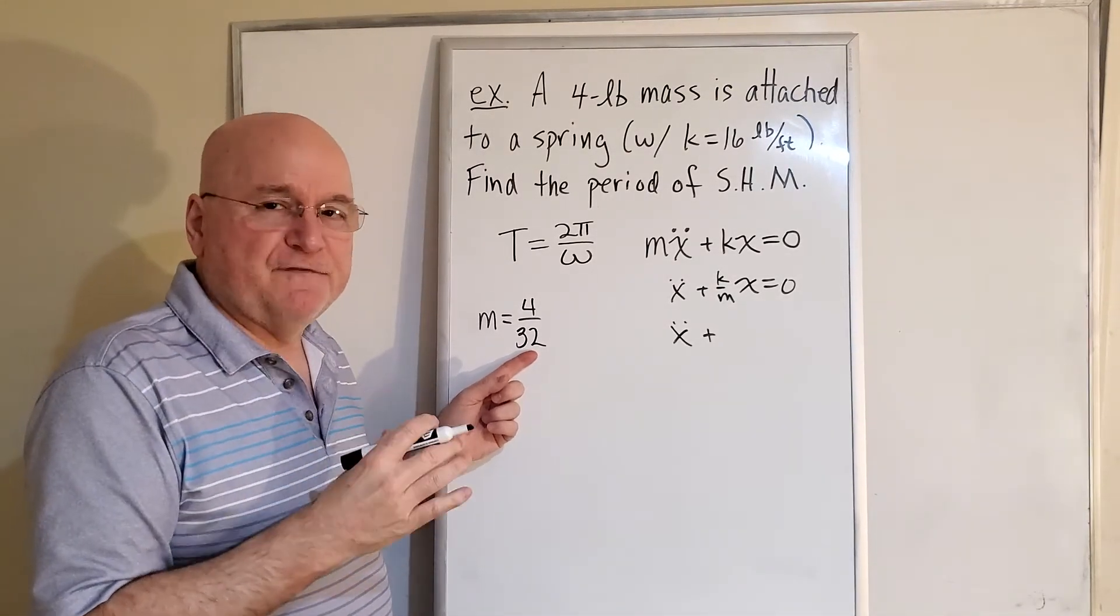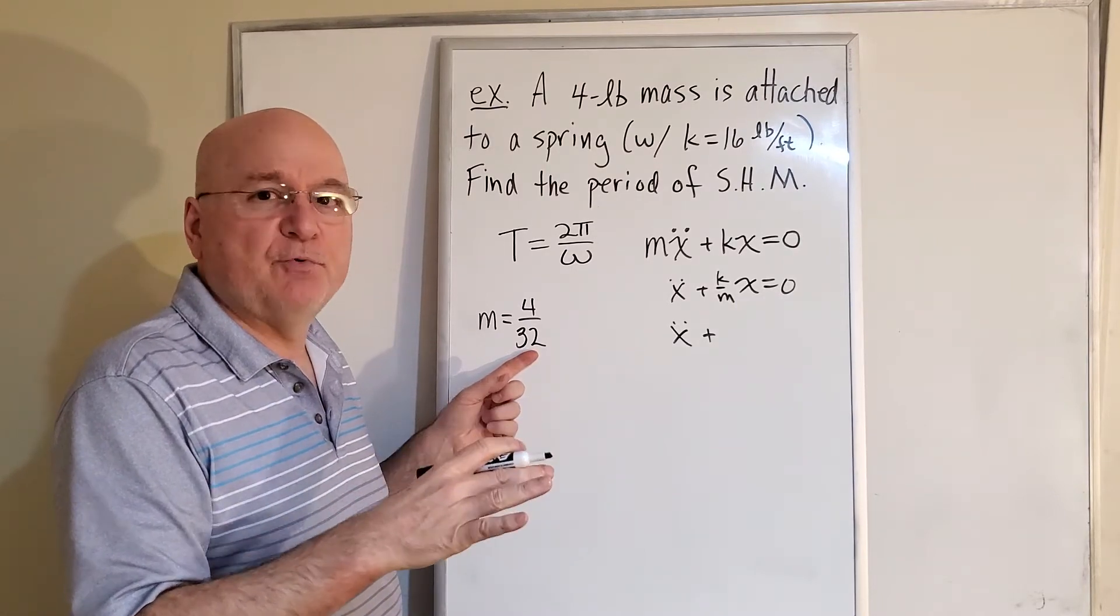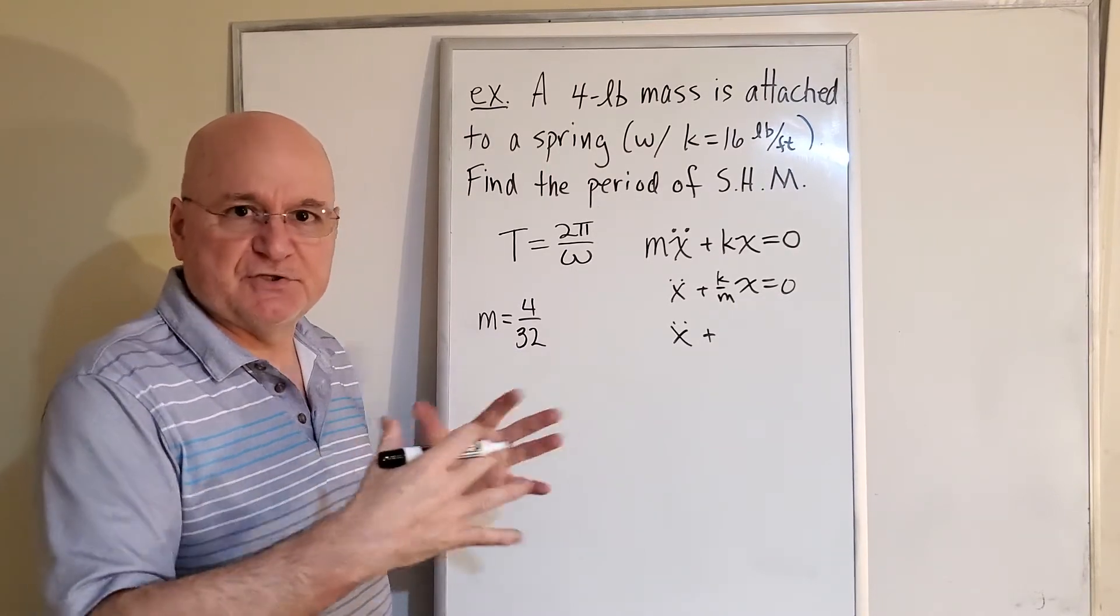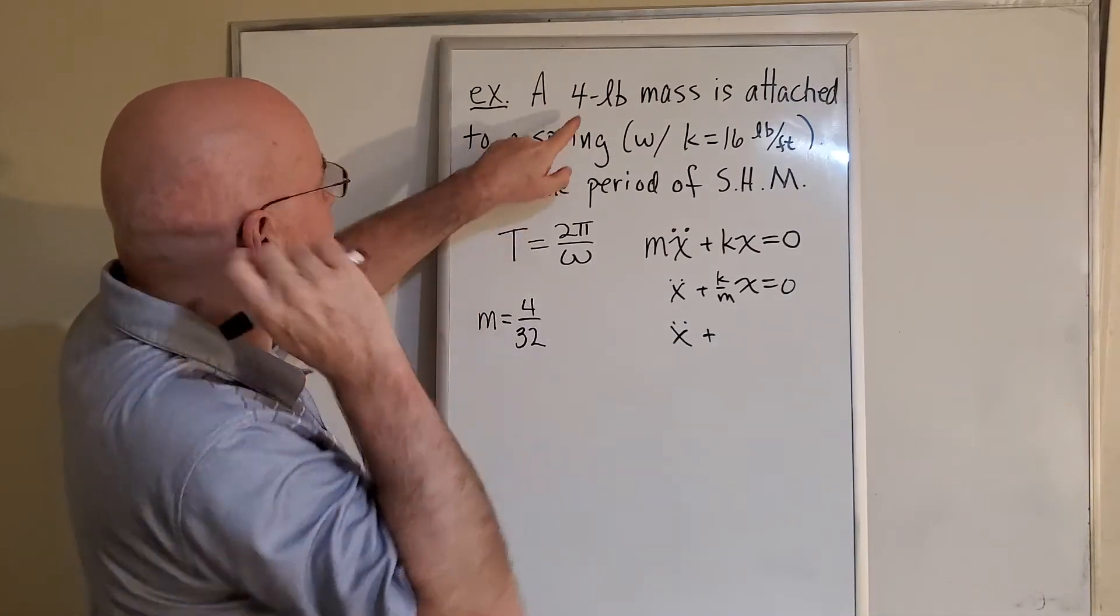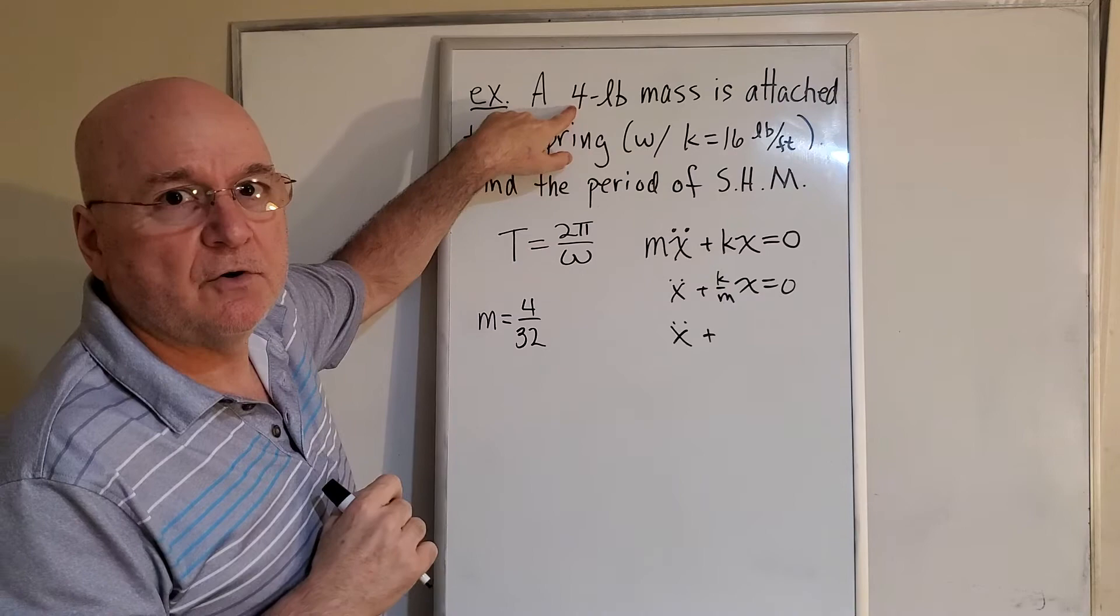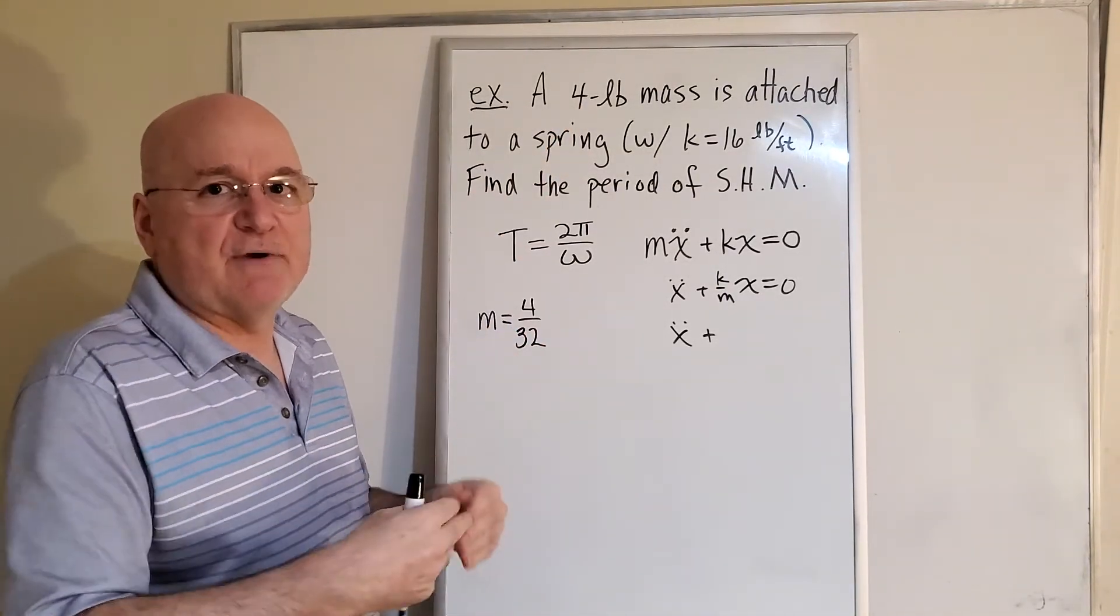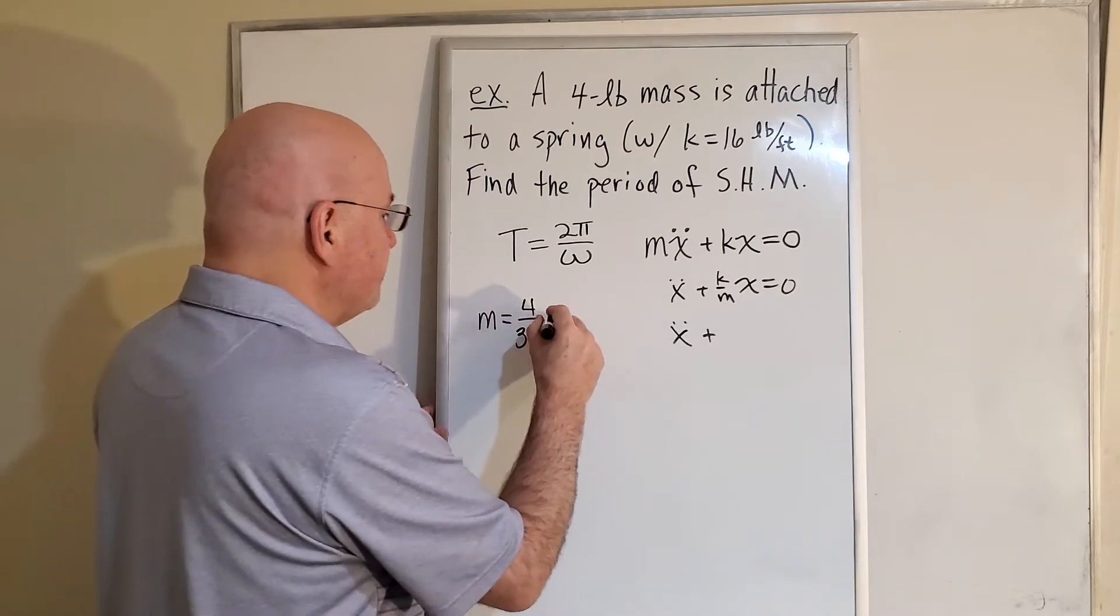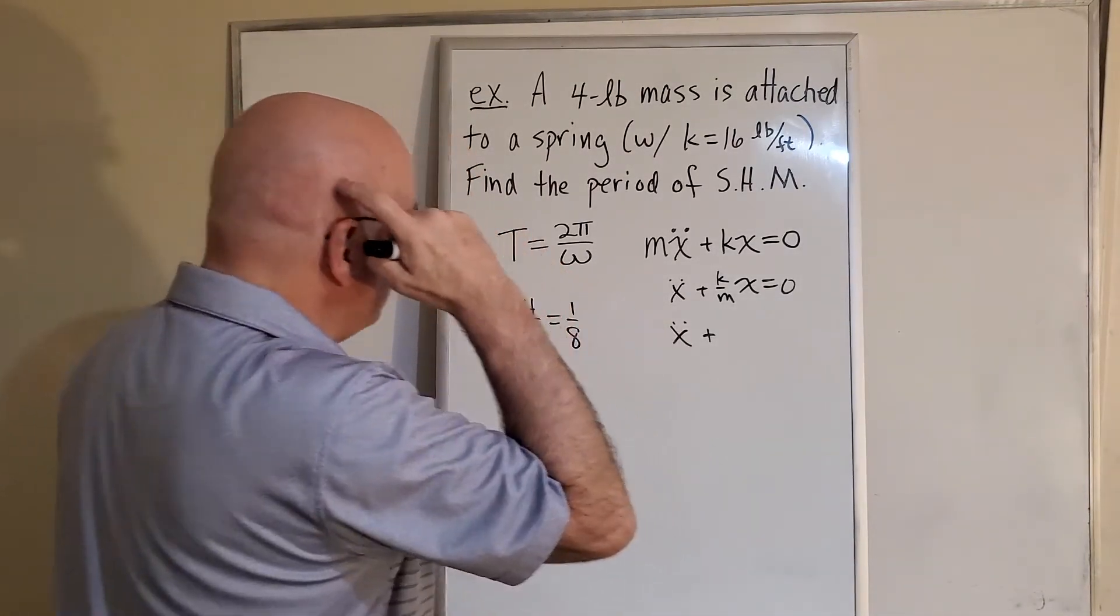32—it's not perfect, it's not exact, it's more close I believe to 32.2, but we're just going to use 32. Okay, so that's all you need to remember to do. This is a weight, so we're taking the weight and dividing gravity out of it. So m is 1/8. So what do we have?